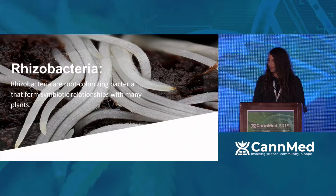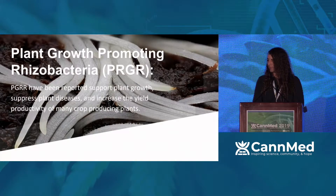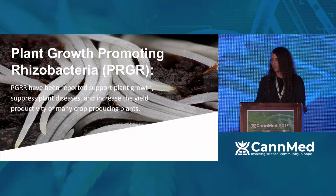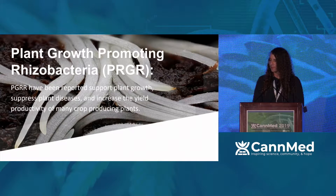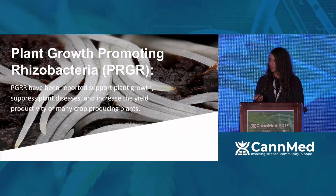Rhizobacteria are root-colonizing bacteria that form symbiotic relationships with many plants. In other industries, this is a really common application. Plant growth promoting rhizobacteria — PGPRs — have been reported to support plant growth, suppress plant diseases, and increase the yield productivity of many crop-producing plants. In all other agricultural industries, this is really common. They inoculate their crops and see different agricultural results. The term plant growth promoting rhizobacteria is just an attractive acronym. We want to see our plants perform better, and maybe this is a good opportunity for us to discover how.